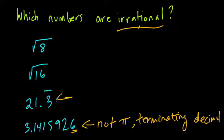And now we get to 21 and 0.3 repeating, which is really 21 and 1/3, because 1/3 is 0.3 repeating. Now this decimal doesn't end. The 3's go on forever. But this is a decimal with a repeating pattern.